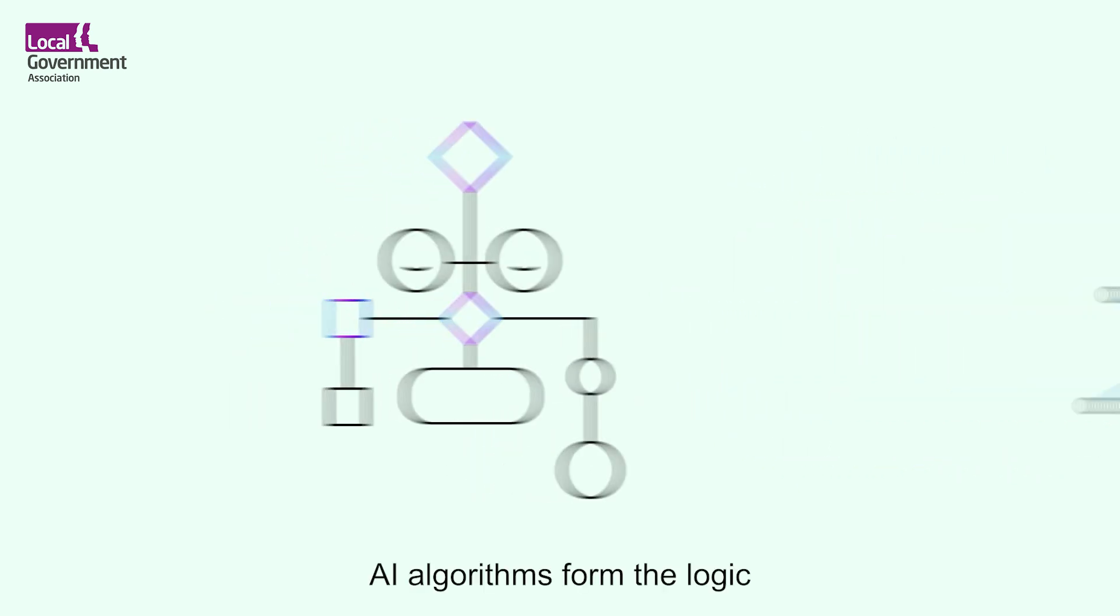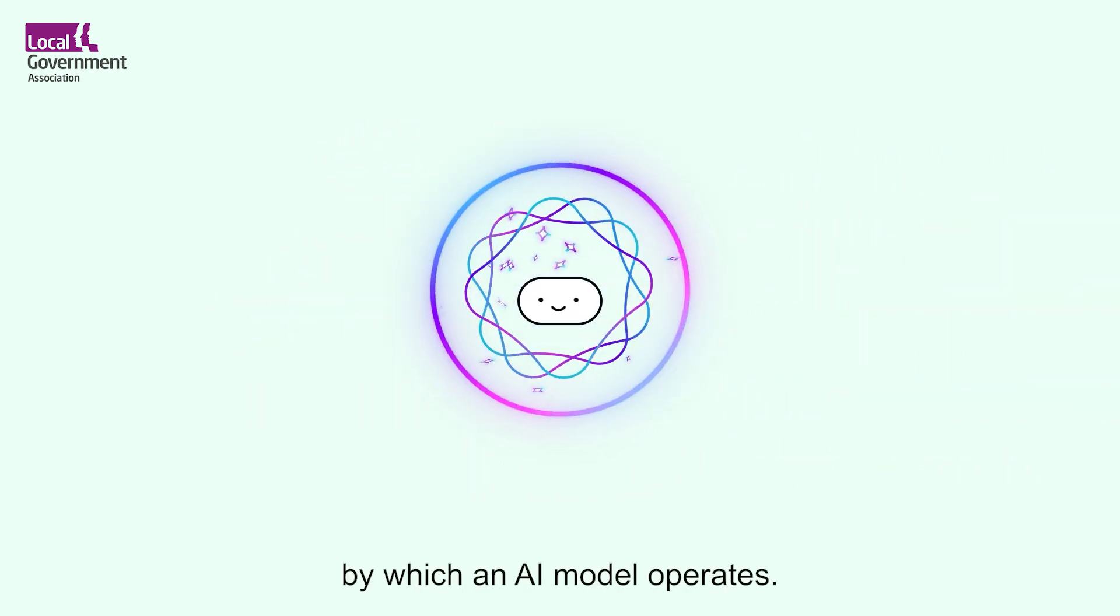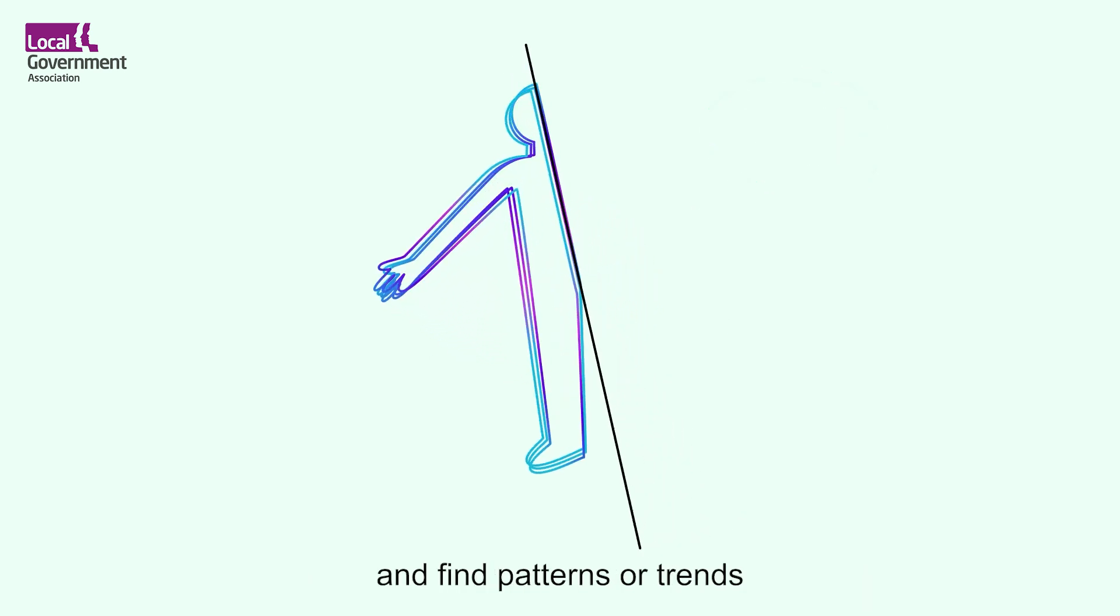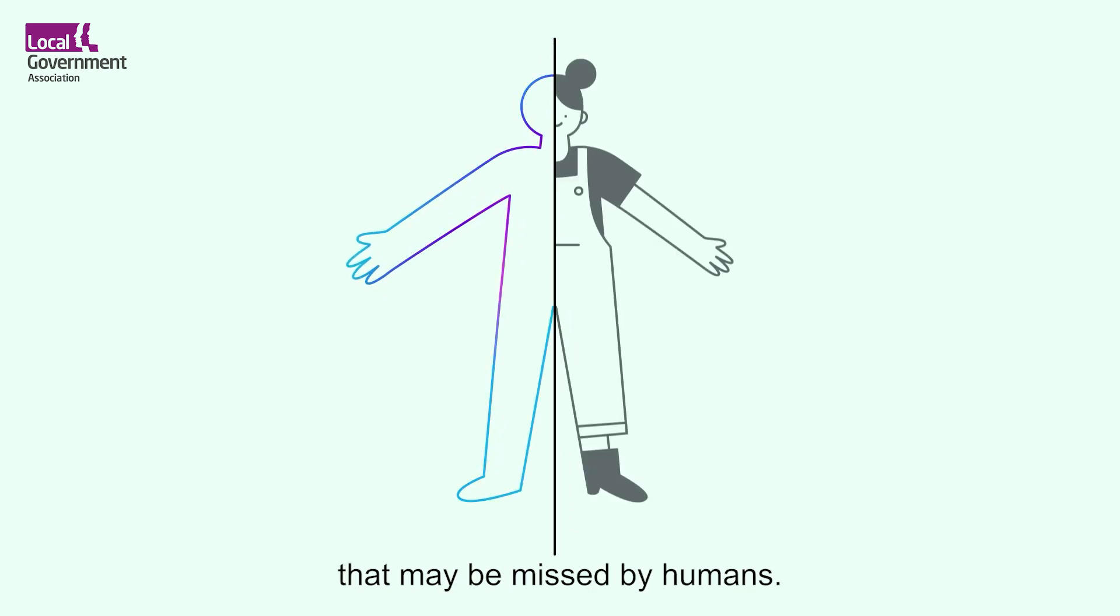AI algorithms form the logic by which an AI model operates. Such models can produce impressive outputs, mimic human behaviour and find patterns or trends that may be missed by humans.